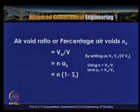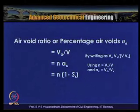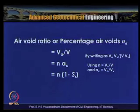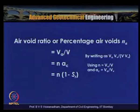Air void ratio or percentage air voids NA is defined as the volume of air to total volume: NA = VA / V. By writing NA = (VA/VV) × (VV/V) = AC × n, and substituting AC = 1 − SR, we get: NA = n(1 − SR). When SR = 1, NA = 0, confirming that for a saturated soil there are no air voids.